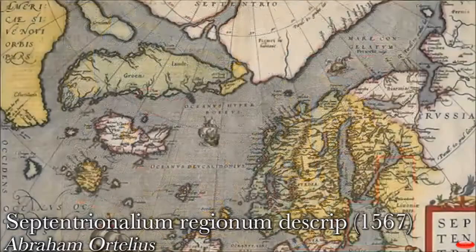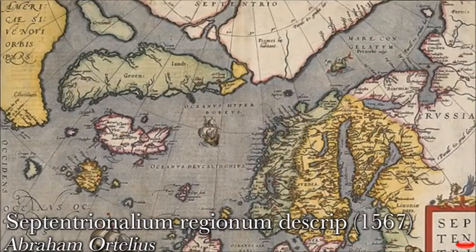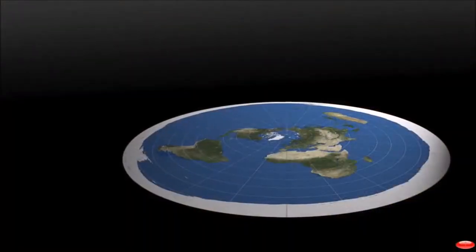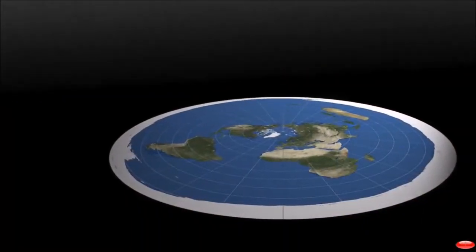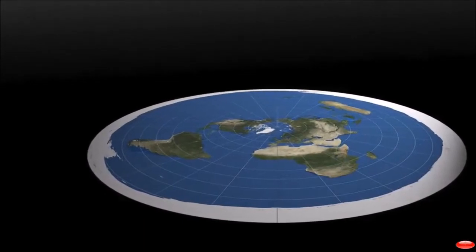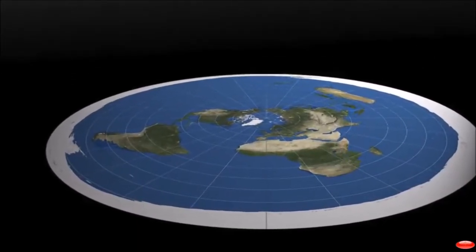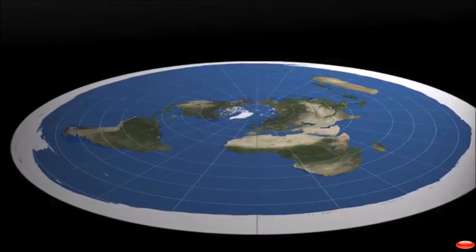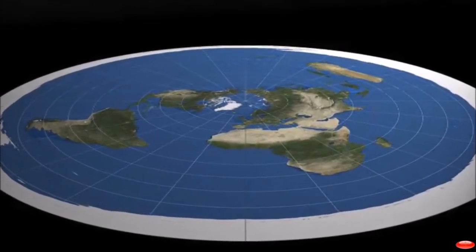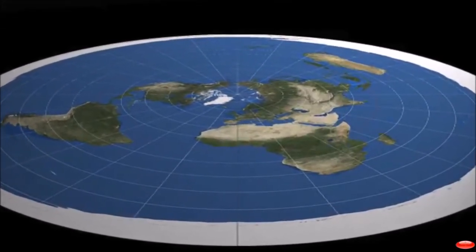This map from 1567 by Abraham Ortelius includes at the North Pole two of the four island continent system, similar to the original Mercator maps, showing Greenland with either a connecting land bridge or a thin canal between the borders. All compasses on Earth point to what could be called the Holy Grail, attracted by the magnetic Mount Meru at the center. The crater, when entered, brings one into a mystical, hidden land.